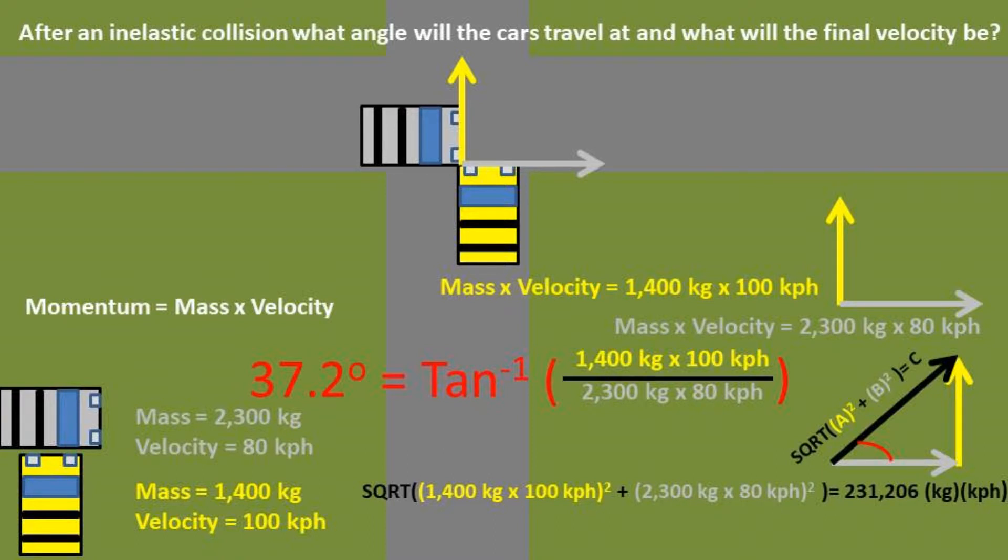After taking the square root of the momentum of the yellow car squared plus the momentum of the gray car squared, we are left with a momentum of 231,205 kilograms kilometers per hour.